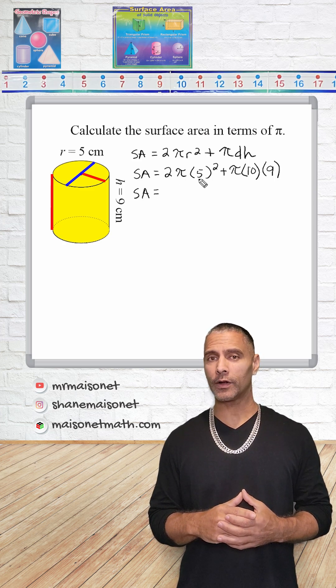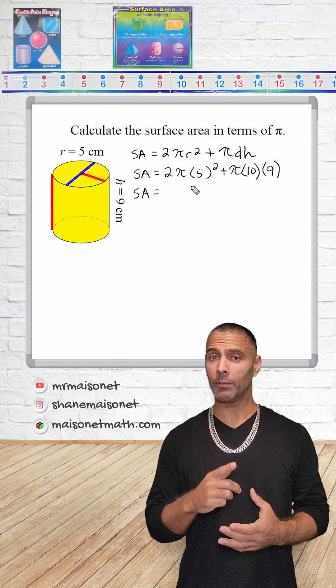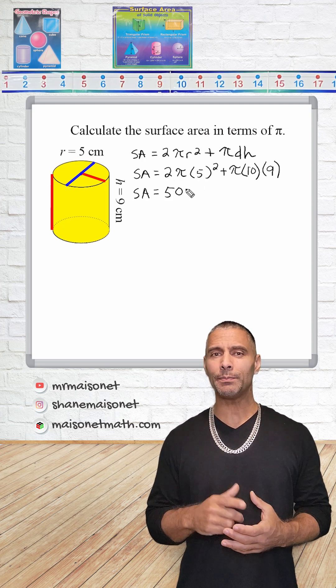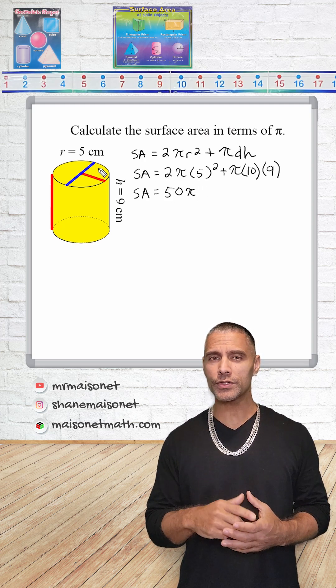First, calculate 5 squared, which equals 25, and then multiply this by 2 to get 50. So 50π is the total area of the two circular bases.